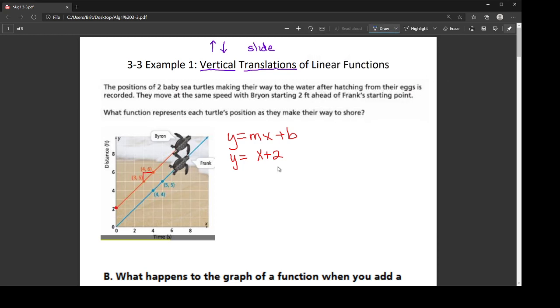Now the equation for Frank, again, I'm using slope-intercept form. His slope is also 1 because it rises by 1 and runs by 1. So I put an invisible 1 where the M is. But his y-intercept is at 0. So I'm not going to put anything here where the B is because plus 0 doesn't need to be written.